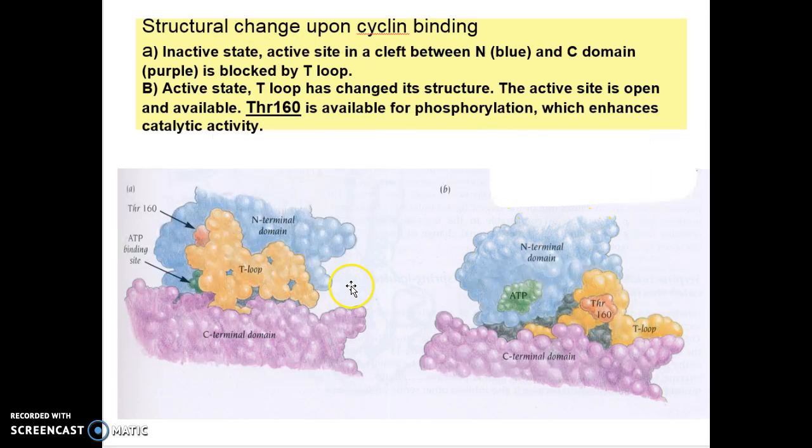This is a cross-section view for the inactive and active states. In the inactive state, active sites in the crevice between the N-terminal blue and C-terminal purple domains are blocked by the T loop. In the active state, T loop undergoes structural changes so that active sites are open and available for substrate binding.